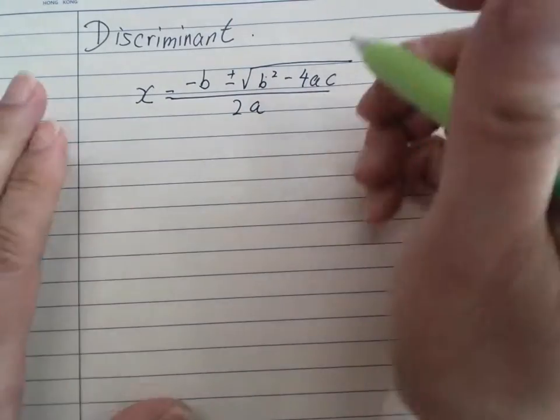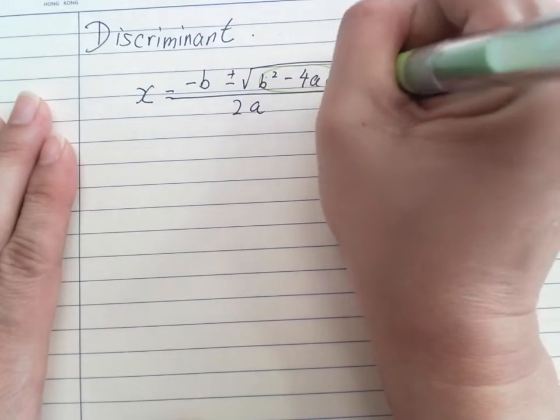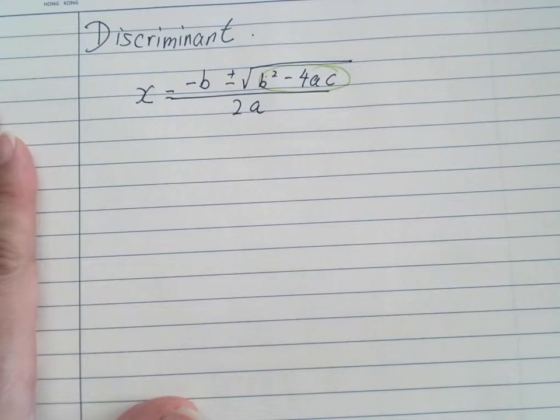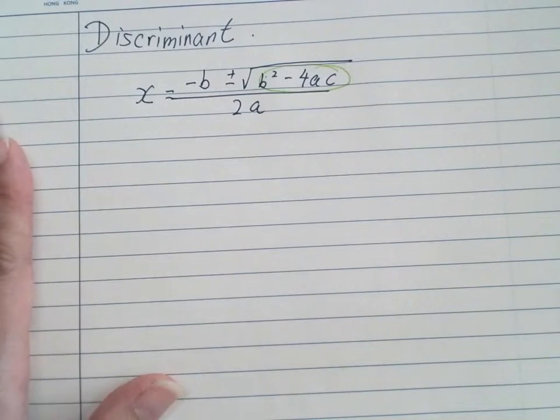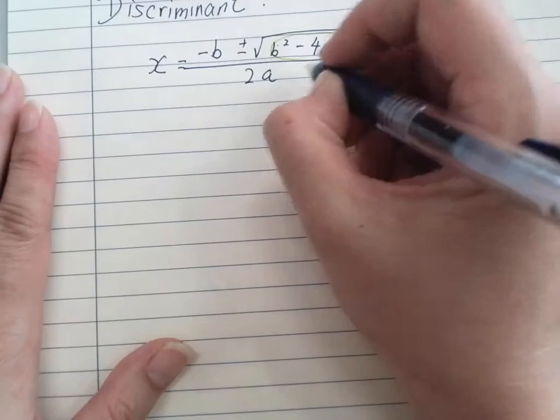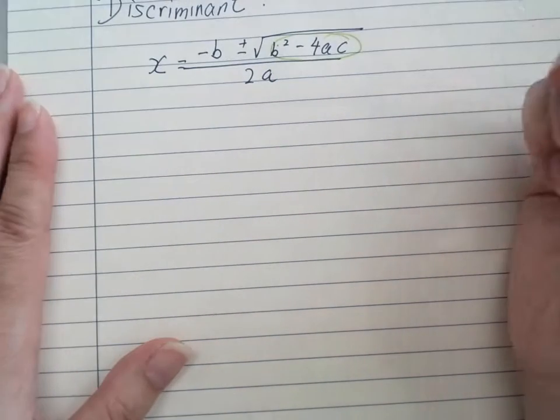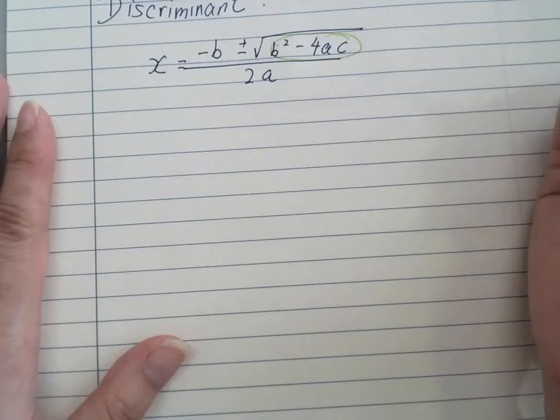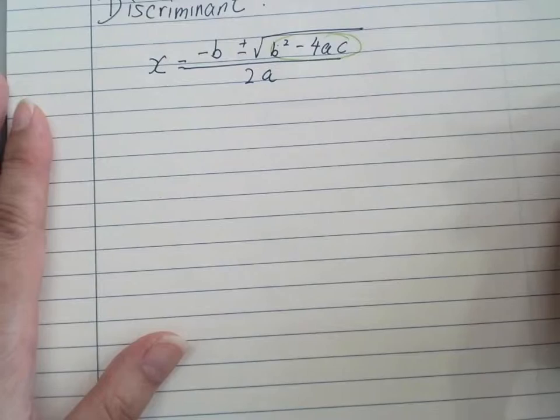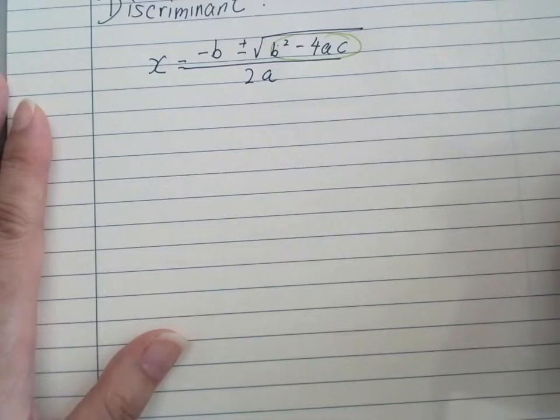Now, what I want to stress is the expression under the square root, because if we have a negative under the square root, it will never happen. So we do not like b squared minus 4ac smaller than 0, because there will be no answer, or no real root, that's what we call.